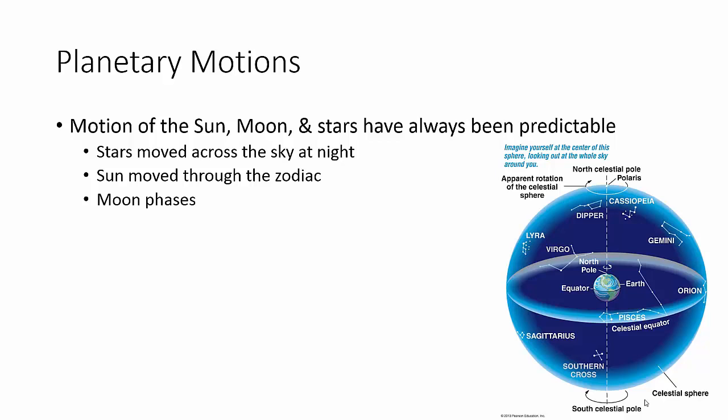So, they came up with this thing called the celestial sphere, and in it, the Earth is in the center. Everything else moves through what's called the zodiac, the sun and the stars. And this thing actually was able to predict the moon phases quite accurately.